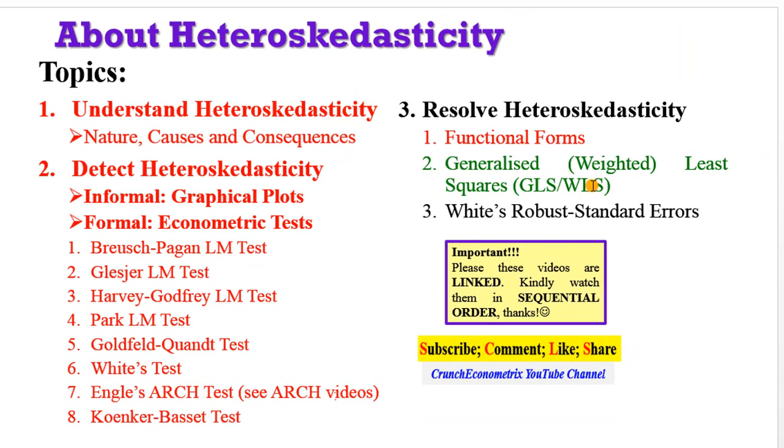If you are just joining this tutorial, we have covered quite a lot on how to understand the nature, the causes, and the consequences of heteroskedasticity. We have also covered how heteroskedasticity can be detected using both informal and formal approaches. In resolving heteroskedasticity, we have talked about how functional forms of a model can actually eradicate that problem of heteroskedasticity.